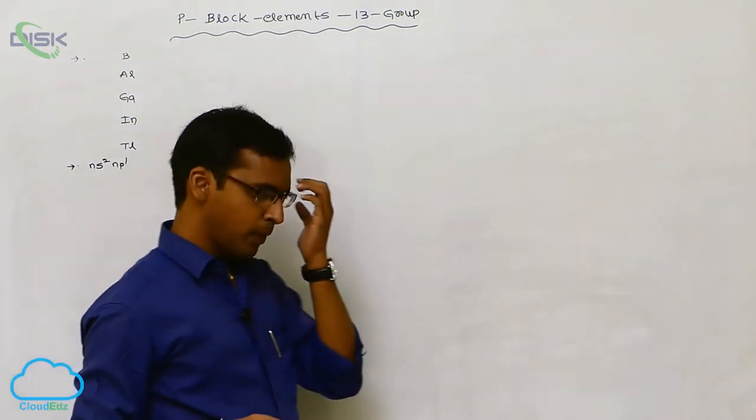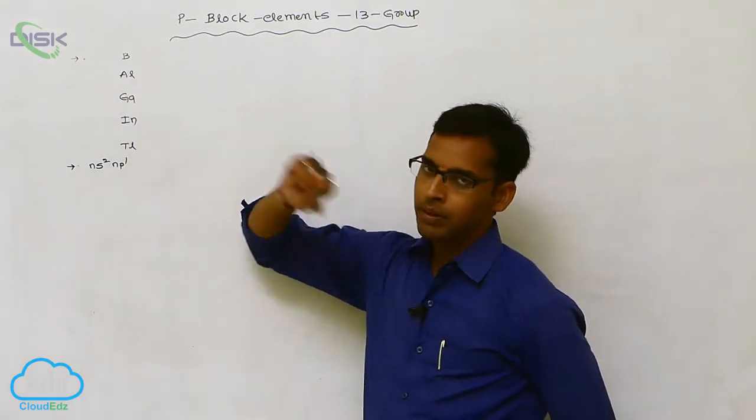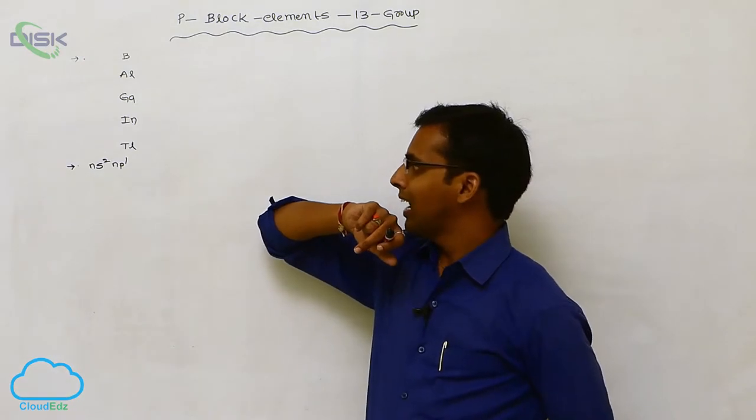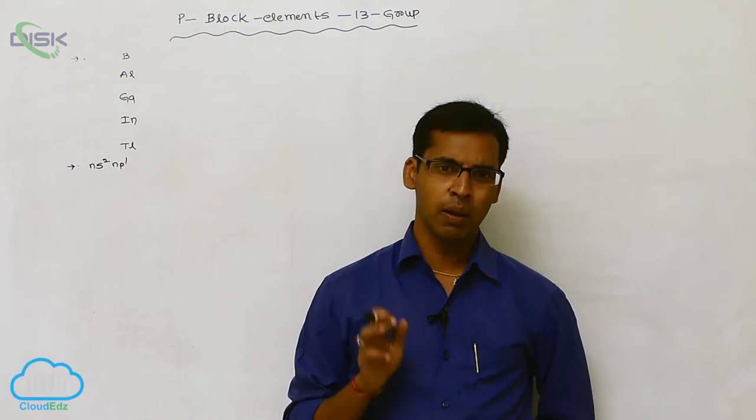In this 13th A group elements, the boron is a non-metal. Boron is non-metal. Aluminum is a metal. And gallium, indium, thallium, all are metals. All are shows the same chemical properties.